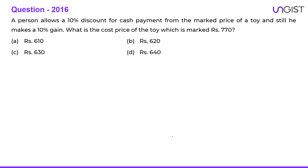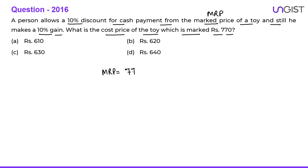The first question, which came in 2016, says: a person allows a 10% discount for cash payment from the marked price of a toy and still makes a 10% gain. What is the cost price of the toy which is marked for Rs.770? MRP is 770, so on 770 a 10% discount is given. So 770 minus 10% gives 770 minus 77, which is Rs.693. So 693 is the selling price.